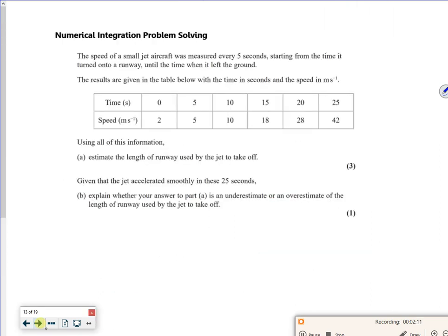Right, let's have a look at this last little bit then. So this is a problem solving question. So it says the speed of a small jet aircraft was measured every five seconds starting from the time it turned onto a runway until the time when it left the ground. The results are given below. Estimate the length of the runway.